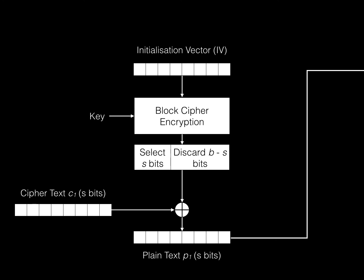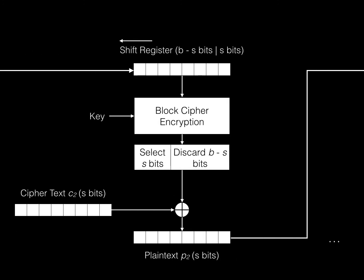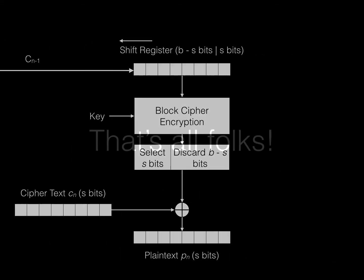P1 is used in the next sequence to follow. We then shift the IV by S-bits and continue the operation. Select the next set of S-bits from ciphertext C2 and XOR to produce plaintext P2. This process continues until all of the ciphertext is converted to plaintext. Decryption done. That's all folks.